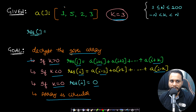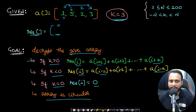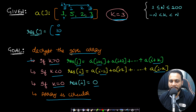For index 0, since k is greater than 0, the result will be the sum from the next index up to the kth index. With i equal to 0, it starts at i+1 and goes till i+k. With k equal to 3, it starts at index 1 and goes till index 3. We add all these values: 5 plus 2 plus 3, which is 10.